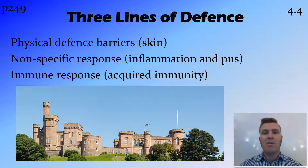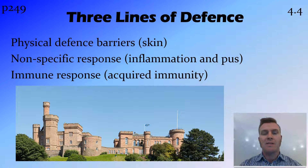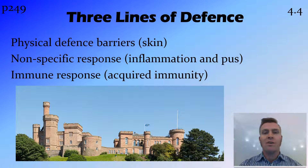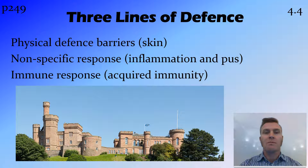Just to recap the three lines of defense: we have the physical defense barriers of the skin — in our castle this is the walls and the moat. We then have our non-specific response, being inflammation and pus, which we'll go into more detail shortly, and then the immune response, which is the specific acquired immunity.